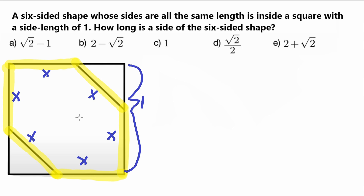When doing this problem, the first thing I notice is that down here we have a right triangle. I know it's a right triangle because it's inside a square, and a square always has right angles. Do you know any specific formulas or theorems for right triangles? You're probably thinking of the Pythagorean theorem: a squared plus b squared equals c squared.